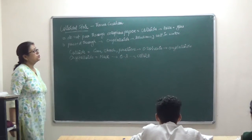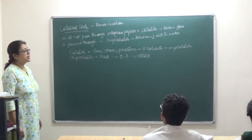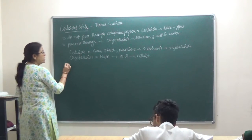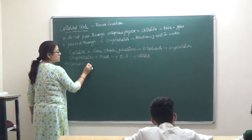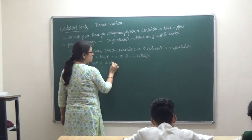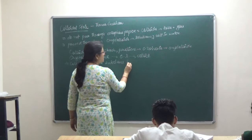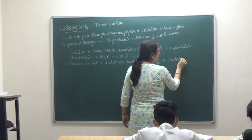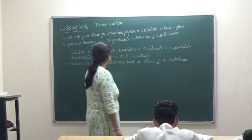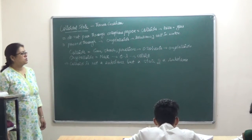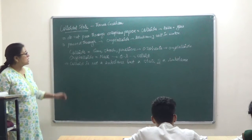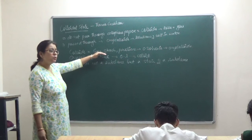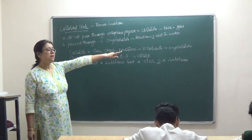So the definition given by Thomas Graham did not satisfy all conditions. A new statement was put forward: colloid is not a substance, but a state of a substance. This is because whenever we mix substances that appear to be colloids in organic solvents, they start behaving as crystalloids.